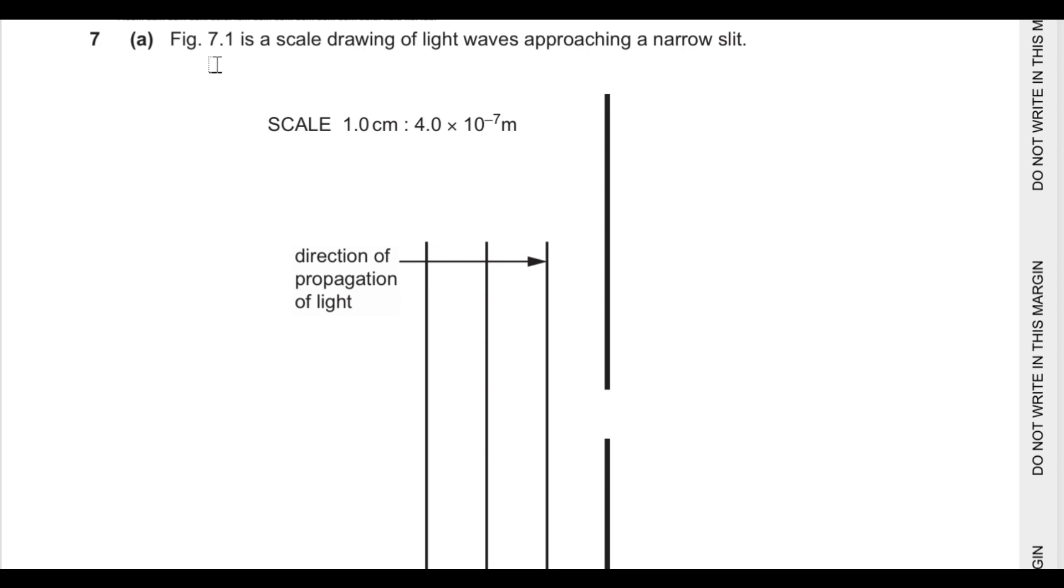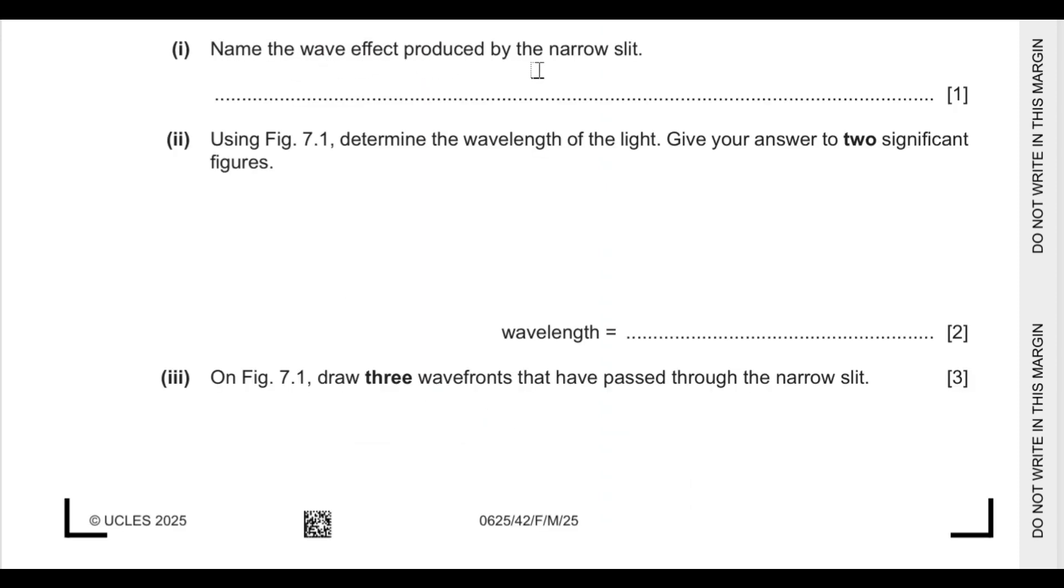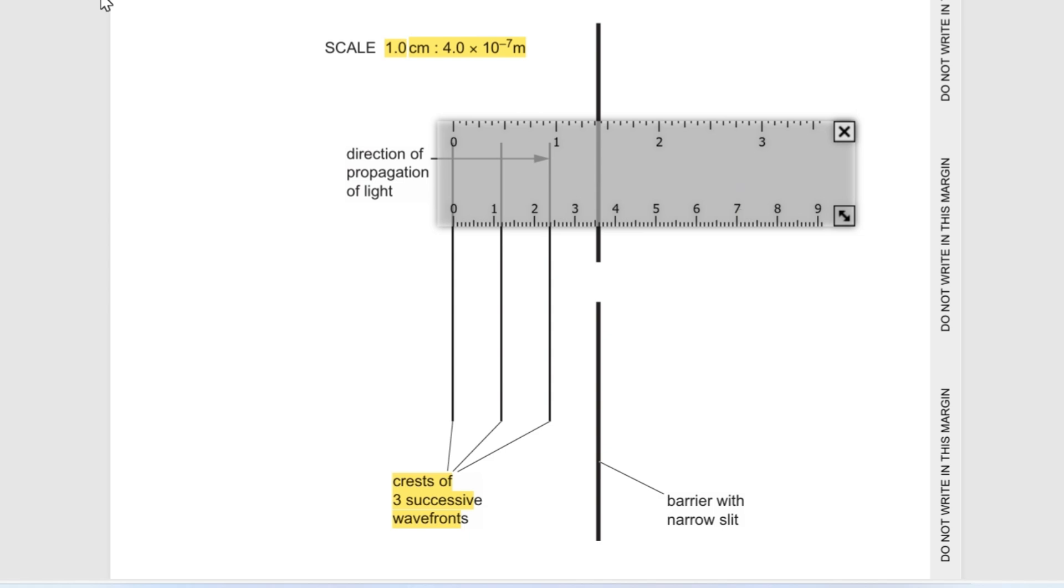The seventh question says figure 7.1 is a scale drawing of a light wave approaching a narrow slit. The scale is 1 centimeter representing 4 into 10 raised to power negative 7 meters. There are three crests approaching and there is a gap which will produce diffraction. Name the wave effect produced by the narrow slit. So diffraction is produced by this narrow slit.